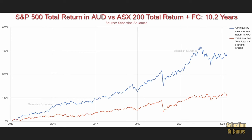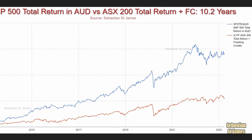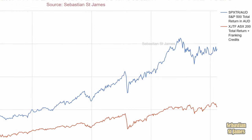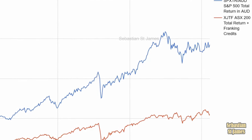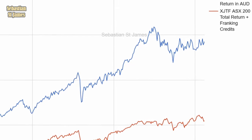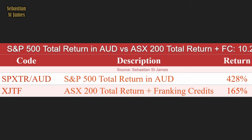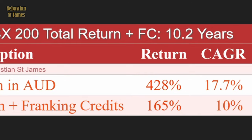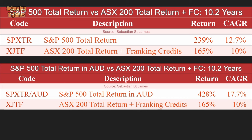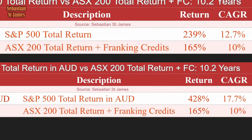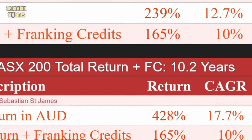Now it's time to compare the ASX200 to the S&P 500, but this time the S&P 500 will be in Australian dollars — dollary-doos. In blue we have the S&P 500 total return including dividends, converted to Australian dollars. In red we have the ASX200 total return plus franking credits. Over 10.2 years, the S&P 500 in Australian dollars has returned 428%, while at home you've only got 165%. The CAGR of America is 17.7% and Australia is 10% — a massive difference. This is the difference currency can make.